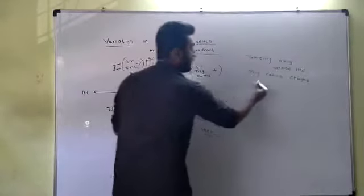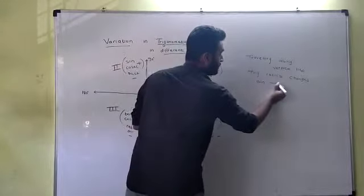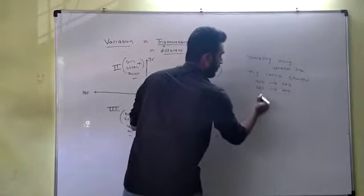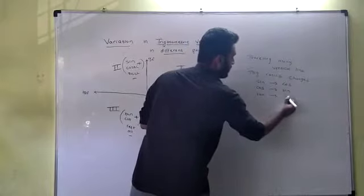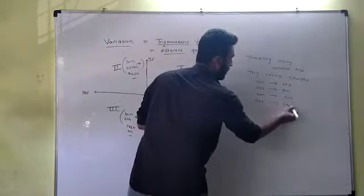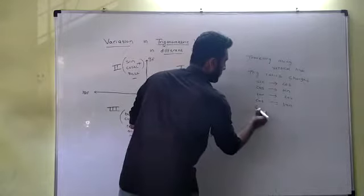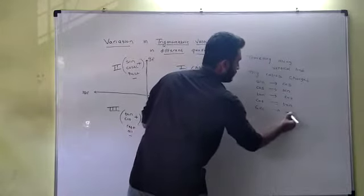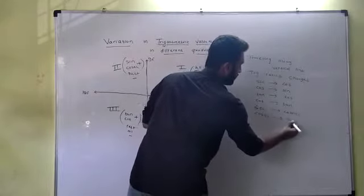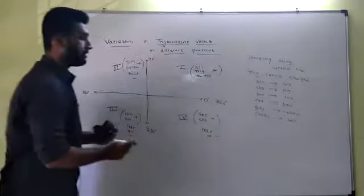How does it change? Sin is converted into cos, cos is converted into sin, tan is converted into cot, cot is converted into tan. Sec is converted into cosec, and cosec is converted into sec theta.